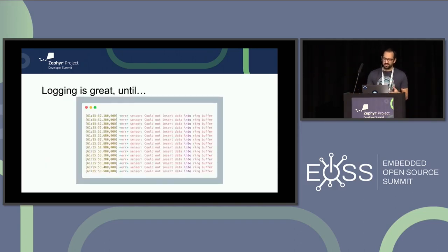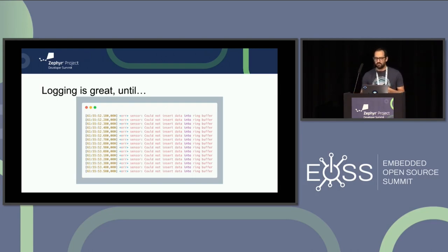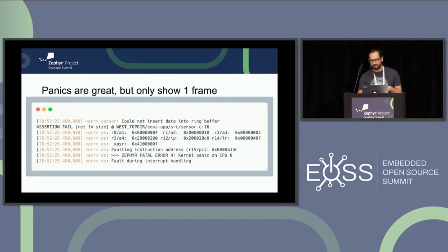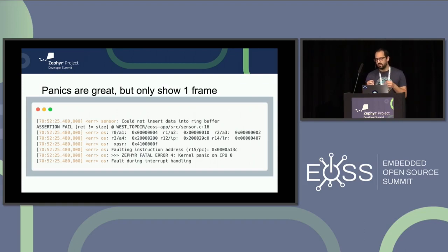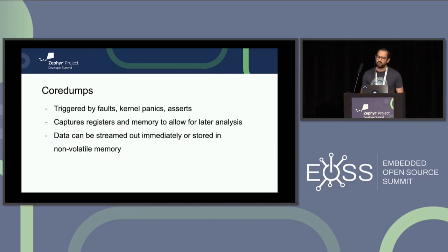Zephyr comes with a really great logging subsystem, but logging can only take you so far. We've all been there where you've got a component that produces a really spammy log message, or you've collected a bunch of logs over a long period of time and it's hard to sift through. The built-in panic message in Zephyr is also great, but the problem is that it's a static picture — it gives you a lot of details, but you have to piece it together yourself. This is where core dumps come in. These are triggered by faults, kernel panics, and assertions in your code.